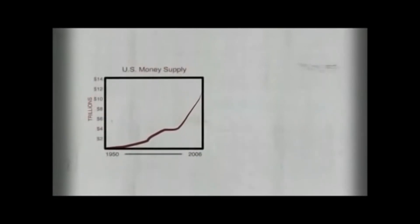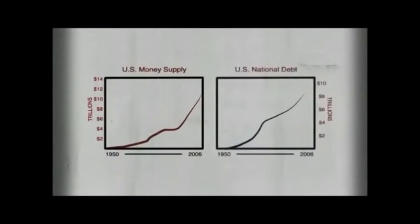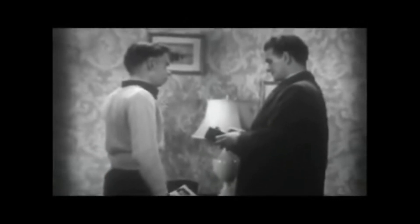Now, if this reality of inherent and perpetual inflation seems absurd and economically self-defeating, hold that thought, for absurdity is an understatement in regard to how our financial system really operates. For in our financial system, money is debt, and debt is money. Here is a chart of the US money supply from 1950 to 2006. Here is a chart of the US national debt for the same period. How interesting it is that the trends are virtually the same. For the more money there is, the more debt there is. The more debt there is, the more money there is. Every single dollar in your wallet is owed to somebody by somebody. For remember, the only way money can come into existence is from loans.